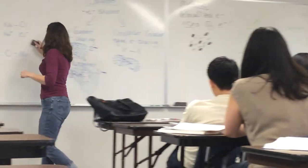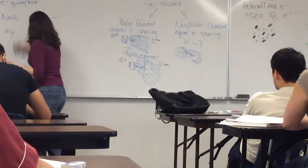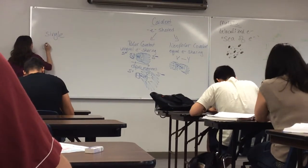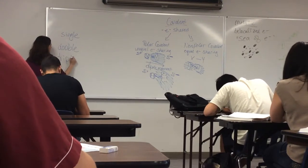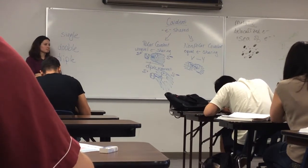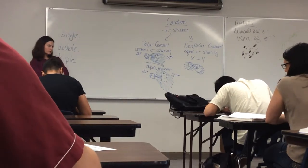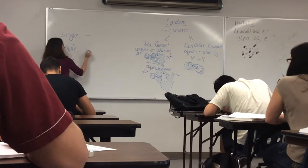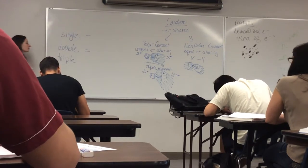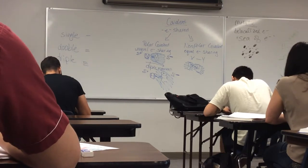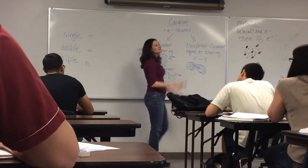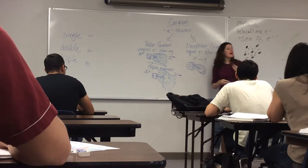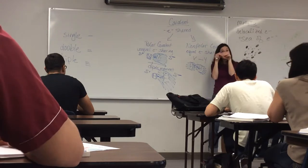The last thing about bonding I want to talk about is multiple bonds — these happen during covalent bonding. We have single bonds, double bonds, and triple bonds — we do not have quadruple bonds. Single bonds are shown with a single dash between two atoms, a double bond has two dashes (it kind of looks like an equal sign), and a triple bond has three dashes. I also want you to understand how many electrons are involved: in a single bond, you have two electrons; a double bond has four electrons; a triple bond has six electrons.